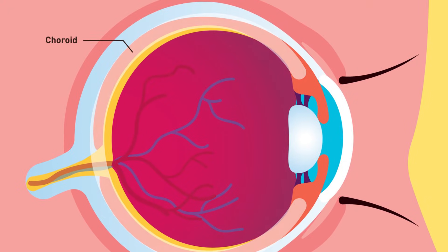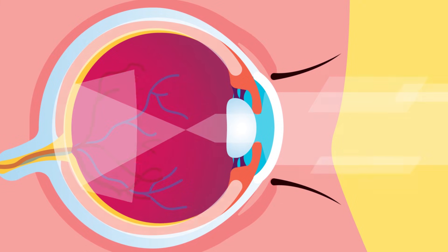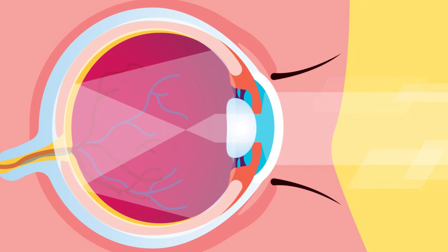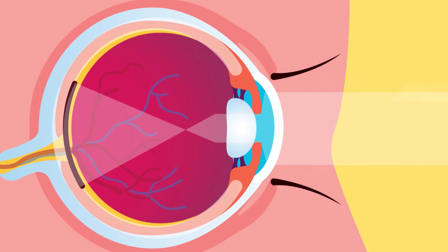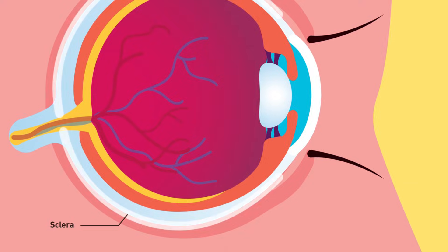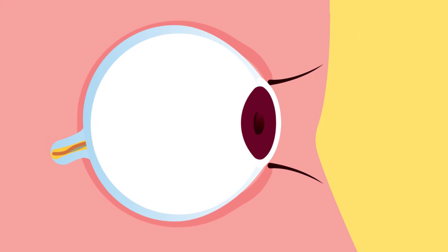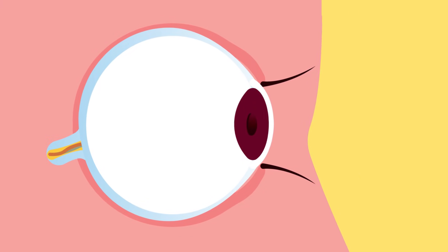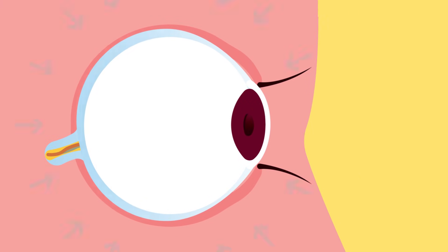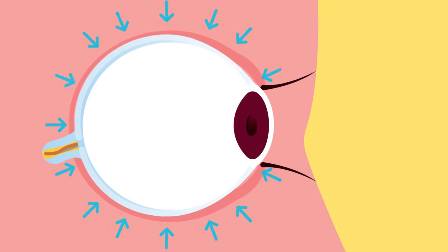The middle layer on top of the retina is called the choroid. It has black pigments and prevents internal refraction of light. Next comes the sclera, a tough, opaque, non-elastic layer on the outside of the eyeball that helps to maintain the shape of the eyeball.